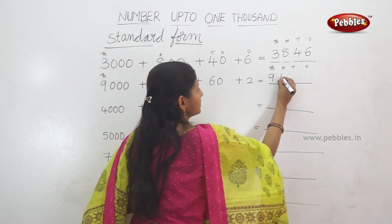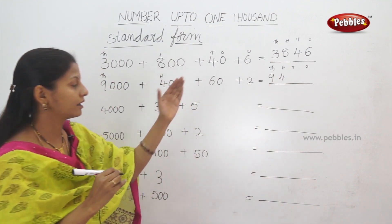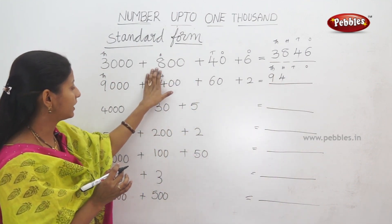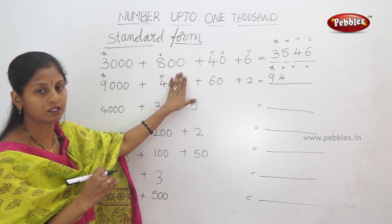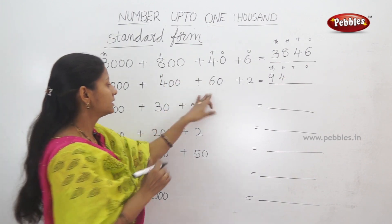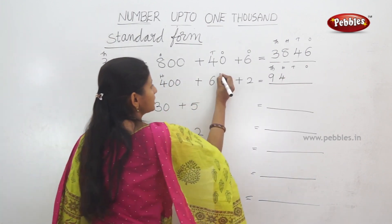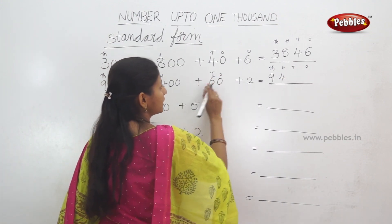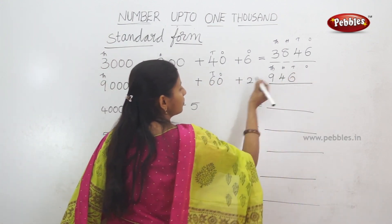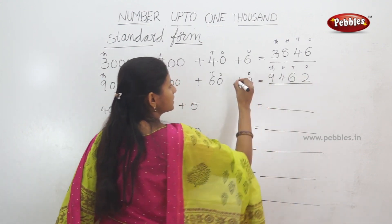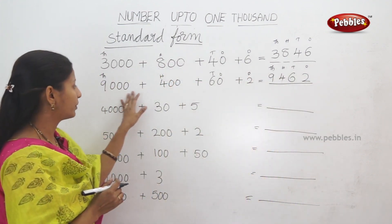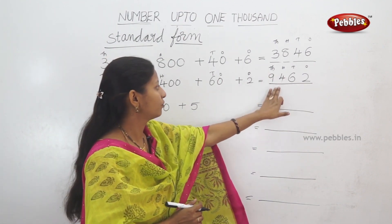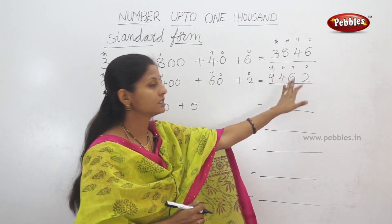4 is the 100s place. So, the 100s place is 4. This number is the 400s place. So, the remaining number: 60. What is the 10s value? 10s is 6, ones is 2. So, this expanded form is 9462.